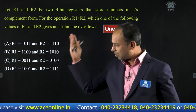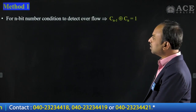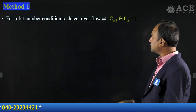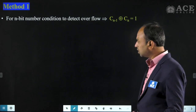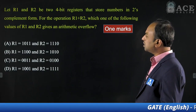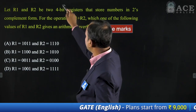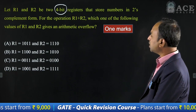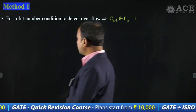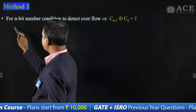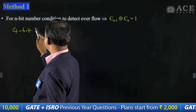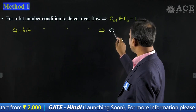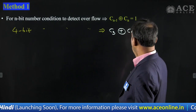There are three methods to check overflow. Method one: for an N-bit number, the condition to detect overflow is C(n-1) XOR C(n) equal to 1. Here in the question, N equal to 4 bits is given. So for a 4-bit number, the condition to detect overflow is C3 XOR C4 equal to 1.